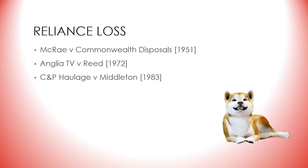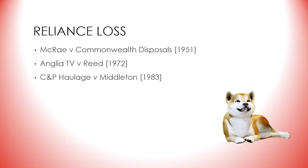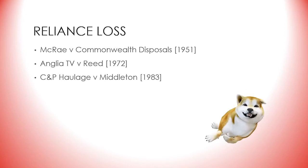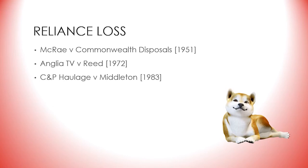It is important to note: firstly, that Anglia was claiming reliance loss because they could not prove what their profits from the production of the film would have been; and secondly, pre-contractual expenditure can be claimed if it was within the contemplation of the parties. In Anglia, Lord Denning suggested that the claimant needs to make a selection whether to ask for expectation or reliance loss. What Denning meant was that the claimant should not be allowed to claim for the same loss twice — expectation loss will normally involve a claim for gross profits, which will already include an assessment of the expenses incurred by the claimant.